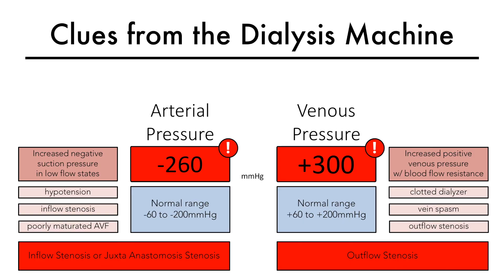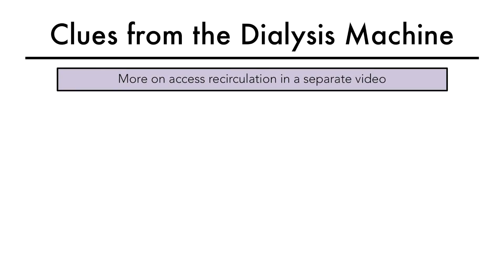Another clinical clue indicative of axis stenosis, both arterial and venous, may be the presence of recirculation and a drop in dialysis adequacy as measured by monthly KT/V. For more detail on this, I will refer you to my videos on hemodialysis kinetics and recirculation. The link to that will be provided below.